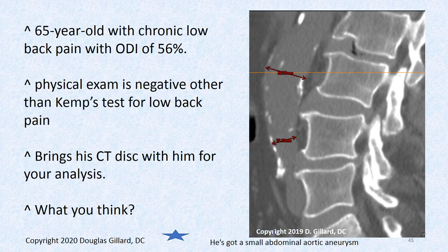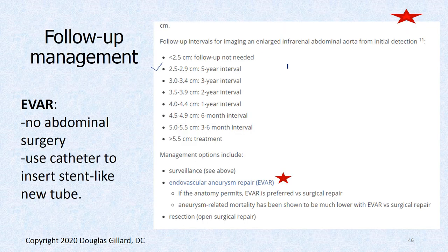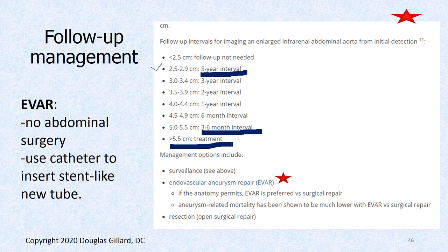Here's a patient I had — radiologists completely missed this one. A 65-year-old for chronic low back pain. Physical was negative. Kemp's test was positive for back pain. He sent me a CD and I said, 'Did you know you have an aneurysm?' He had a 2.6 centimeter — 26 millimeter — aneurysm, which isn't dangerous yet but deserves monitoring. The monitoring chart: between 2.5 and 2.9 cm, have a repeat ultrasound every five years. When they get to 5 to 5.5 centimeters, you need a repeat ultrasound every three to six months. Over 5.5 centimeters, you need surgery.